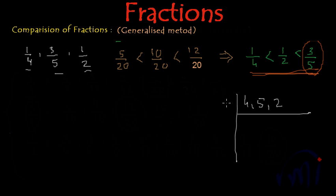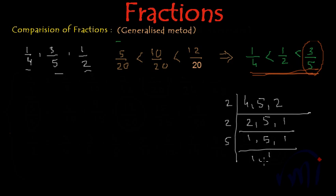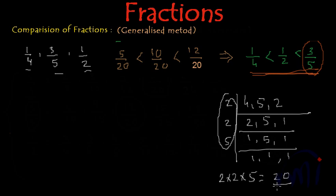I'm going to find the LCM using the common division method. 4 and 2 are divided by 2: we get 2 (from 4), 5 as it is, and 1 (from 2). Then 2 is divided by 2: we get 1, 5 stays as it is, and 1. Then 5 is divided by 5: we get 1. So the LCM is the product of the divisors: 2 × 2 × 5 = 20. The LCM of 4, 5, and 2 is 20, which is the lowest number that is a multiple of all three.